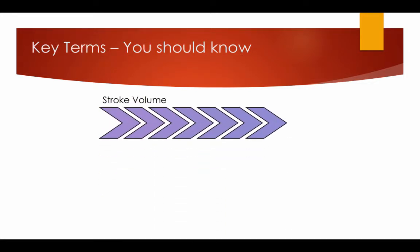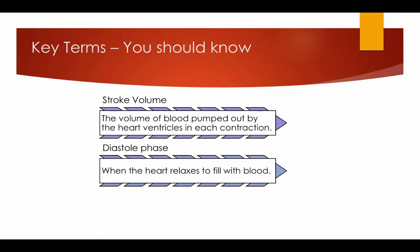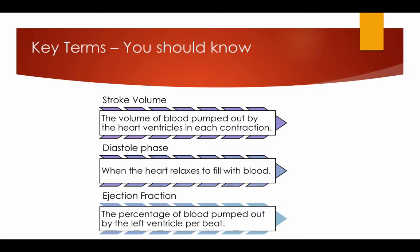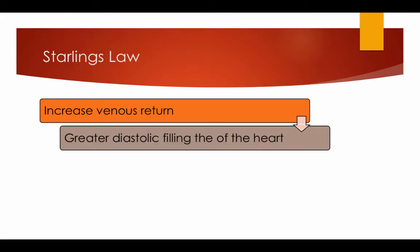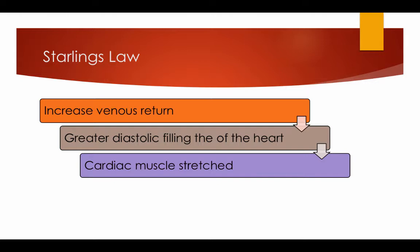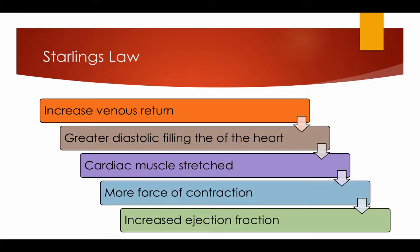Key terms you should know. Stroke volume: the volume of blood pumped out by the heart ventricles in each contraction. Diastolic phase: when the heart relaxes to fill with blood. Ejection fraction: the percentage of blood pumped out by the left ventricle per beat. Starling's law: the increase in venous return causes a greater diastolic filling of the heart, the cardiac muscle is stretched, producing more force of contraction, increasing the ejection fraction.